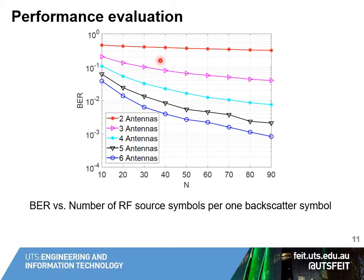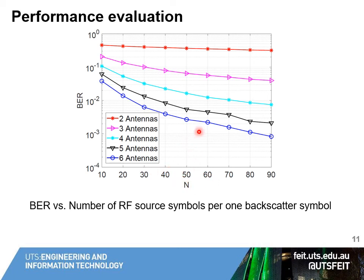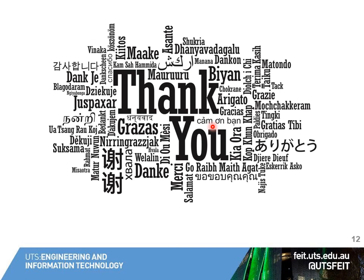Next, we vary the number of RF source symbols per backscatter symbol (N) and observe the bit error rate. As shown, when N increases, the bit error rate decreases, because with a lower backscatter rate the receiver can decode the backscatter signal more easily. Again, a higher number of antennas leads to a lower bit error rate. We observe that when designing the system, we need to consider the tradeoff between the backscatter rate and the value of N — a higher value of N gives better bit error rate performance but a lower backscatter rate. That is the end of my presentation. Thank you for your attention — now it's time for questions and answers.